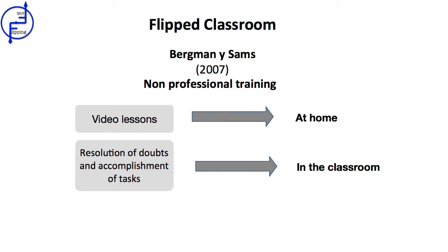In 2007, Jonathan Bergman and Aaron Sams, two chemistry teachers, joined together to make video recordings of their classes for students who, for whatever reason, couldn't attend the class and therefore couldn't access the content of the classroom. They realised that these recordings were also followed by an important number of students who did attend the class. In this way, the students took advantage of the classroom to solve doubts and perform different activities related to the contents.